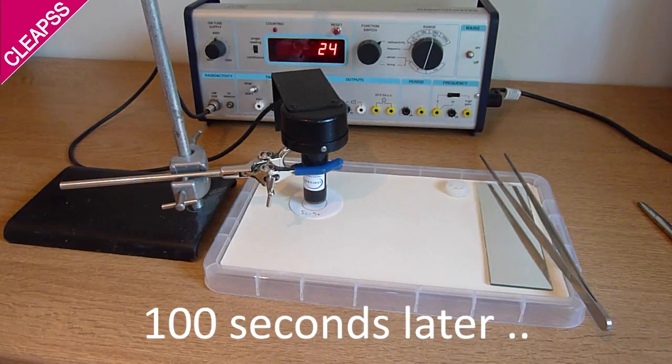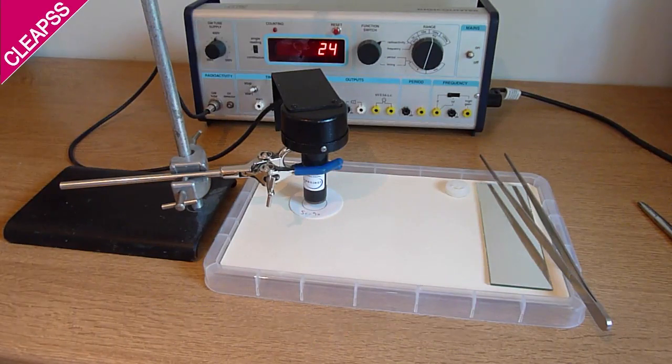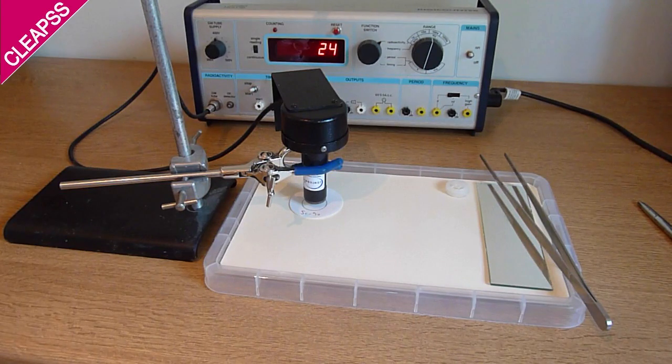If the total count from the filter paper and background, which in this case is 24, is less than twice the average background over 100 seconds, the source has passed the leak test. So for example, the average background count here over 100 seconds was 29.6. The count from the paper and background was 24, so the source has passed its leak test. But if the count had been over 59, it would have failed and would warrant further investigation.